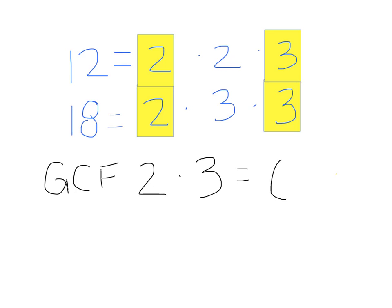Now I want to multiply those numbers because I'm looking for the greatest number they have in common, so I know that is equal to 6. So both 18 and 12 have a greatest common factor of 6.